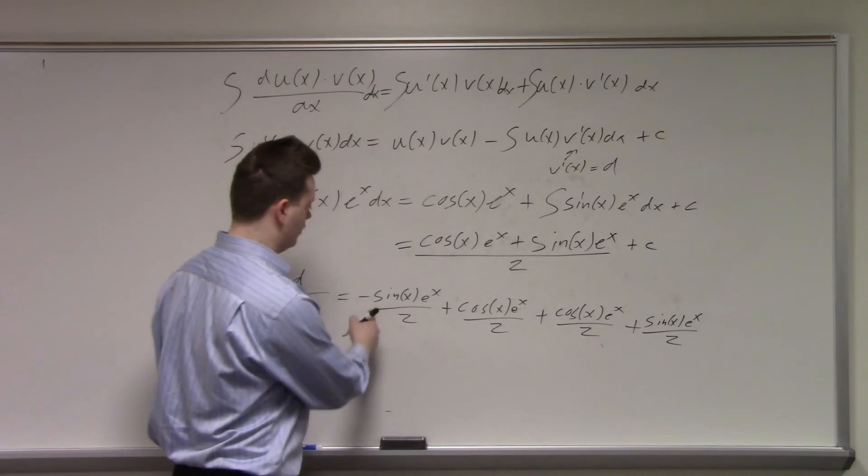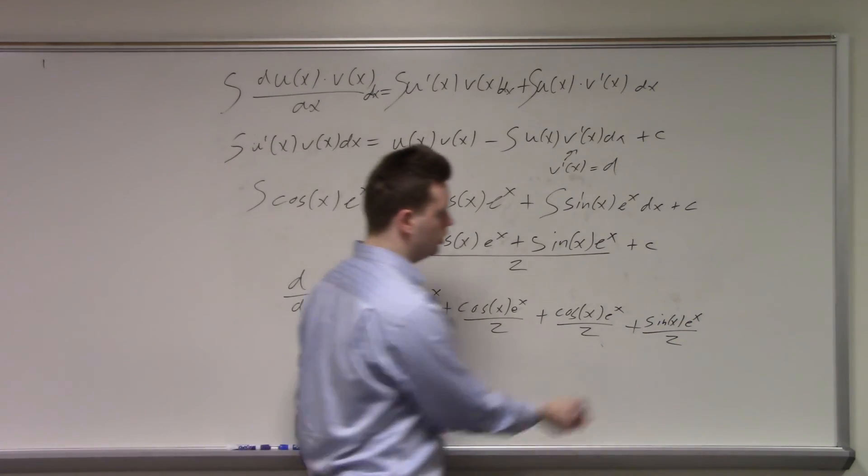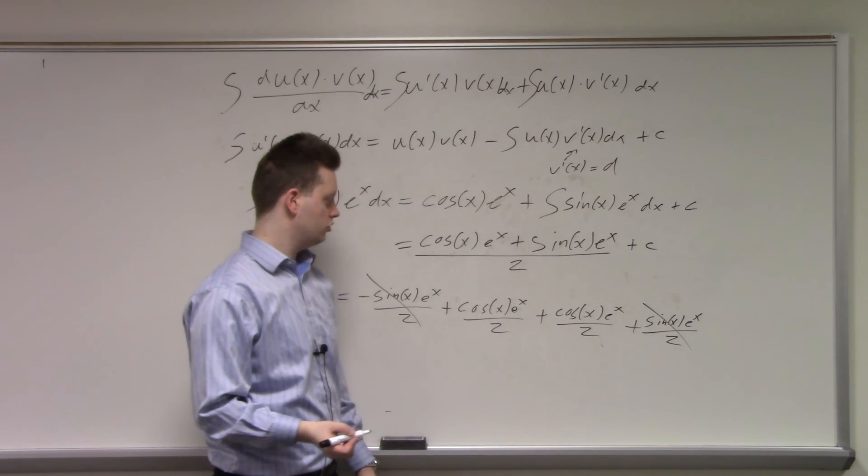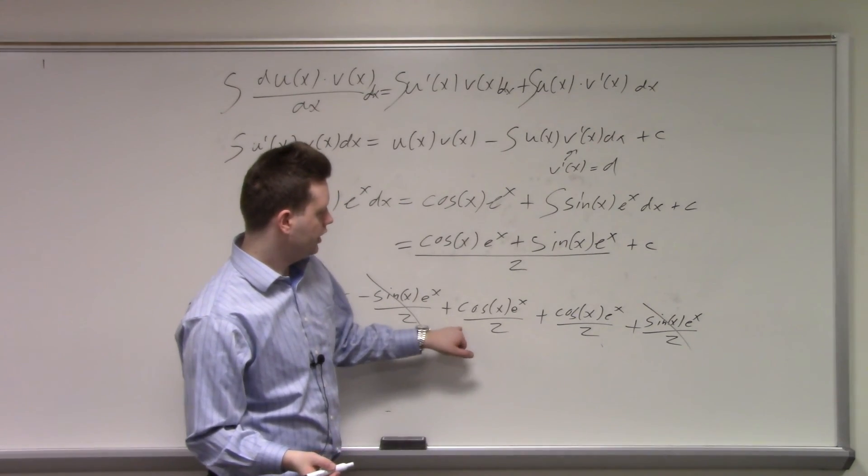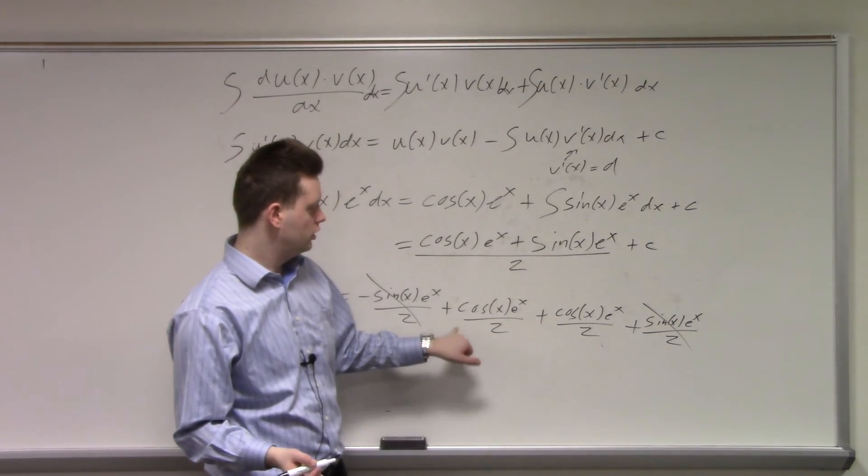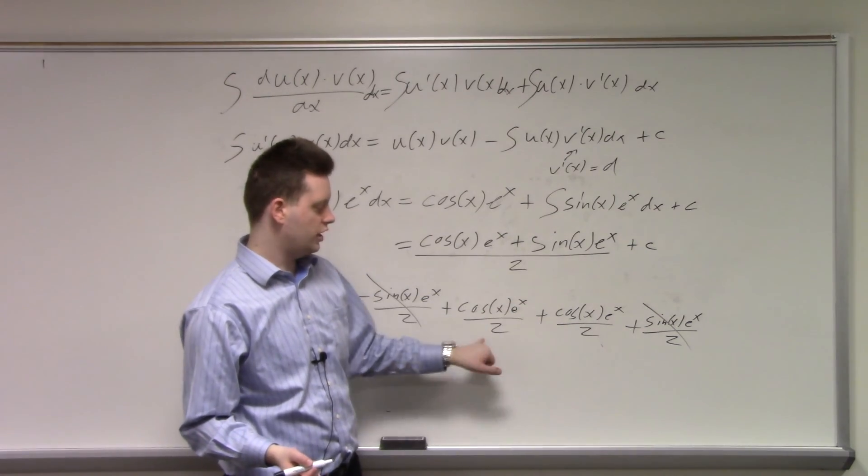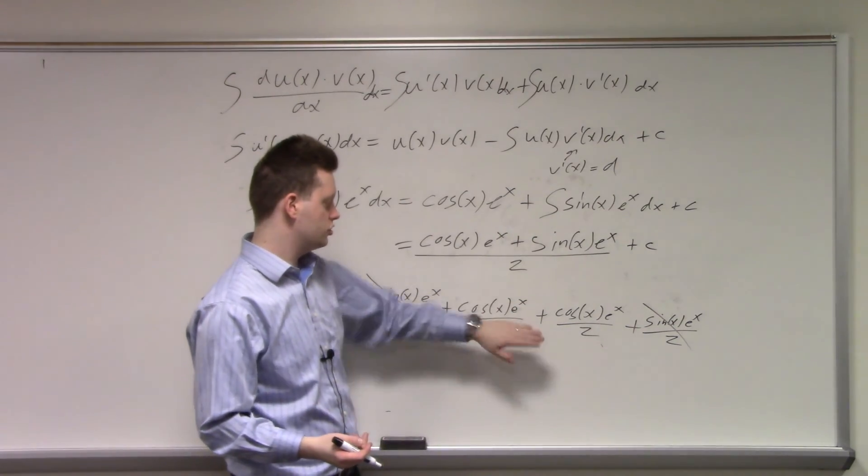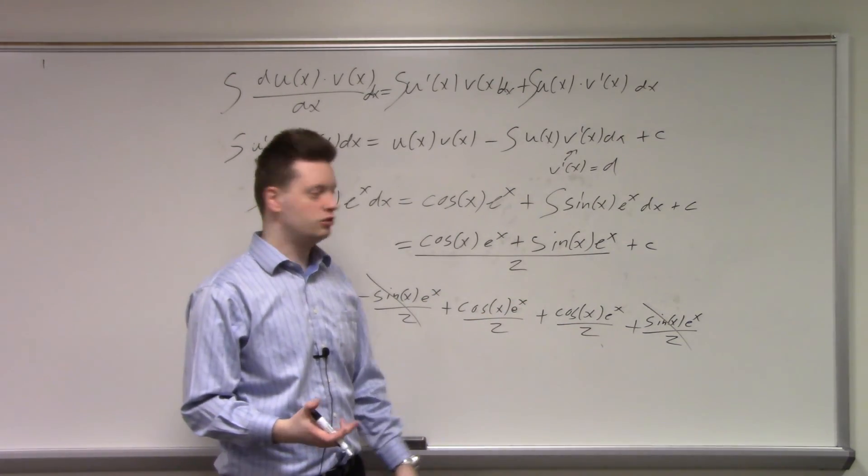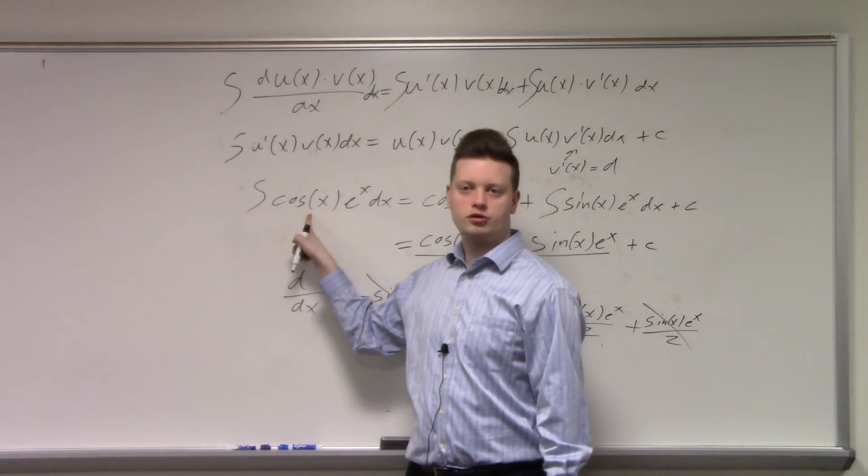If I look at this term, I have minus sine(x) e^x over 2, and plus sine(x) e^x over 2. And I have twice cosine(x) e^x over 2. Summed up gives us just cosine(x) e^x, which is what we wanted in the first place.